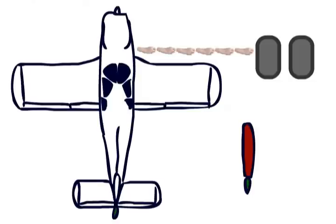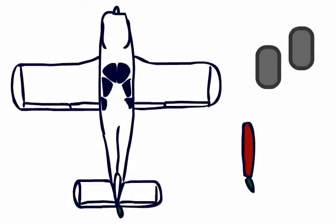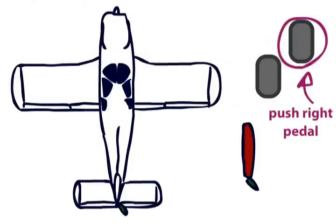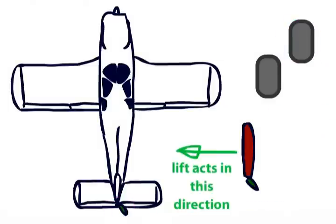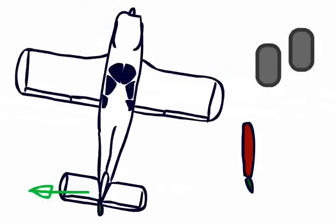Push the right pedal and the rudder will move right. This will cause lift to act on the horizontal stabilizer in this direction, which will pull the tail over here. This yaws the aircraft to the right.